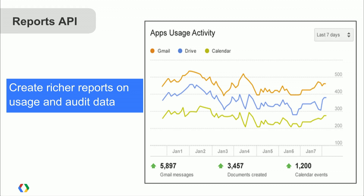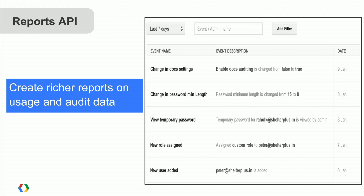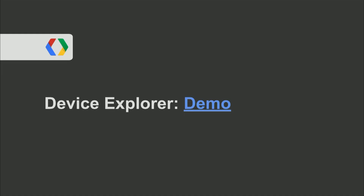The next one is the Reports API. The Reports API allows you to create richer reports on things happening within your domain. This graph was generated with all the data coming back — it shows usage activity of each service within your domain. Another report shows all the different activities within your domain so you can much more easily do things like audits.